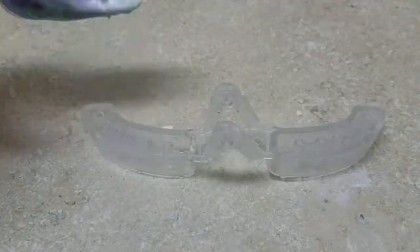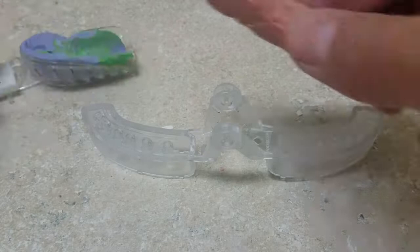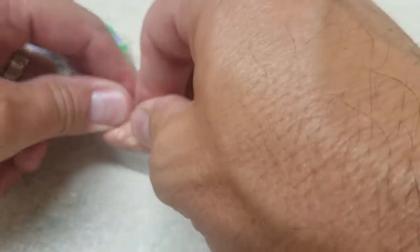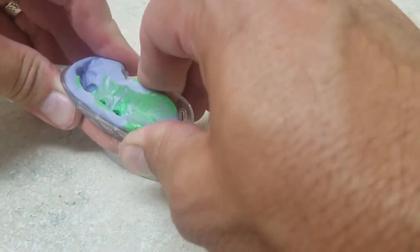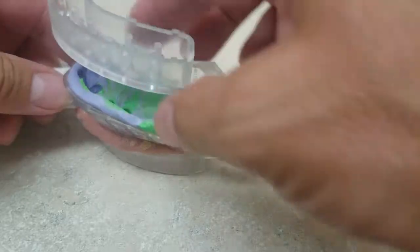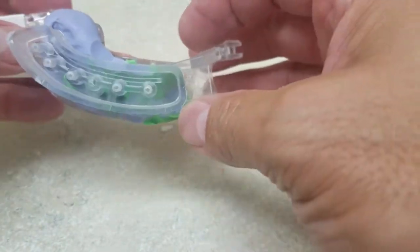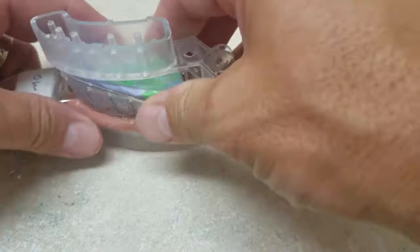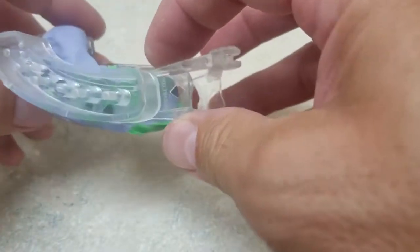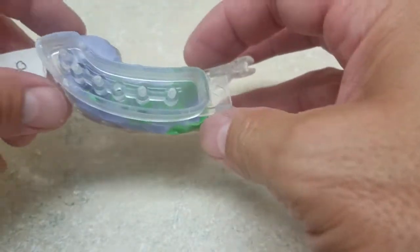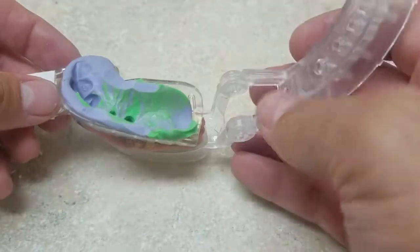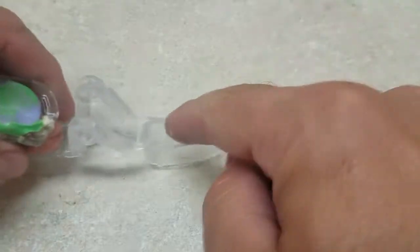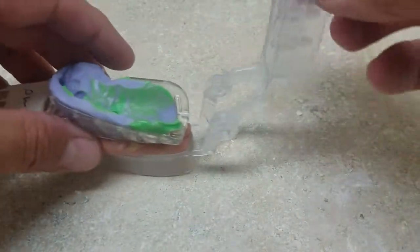Now if you've got a single-sided impression you can still use this system. You just get some of that dental putty and you just stick it right on the tray. Then use that to hold it in place so you can align your pins. Get that set up where you want it, make sure you've got enough room. Then you go ahead and put the pins where you need and pour it up.